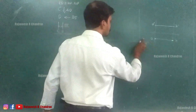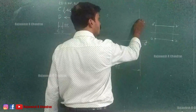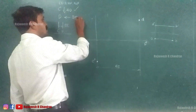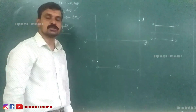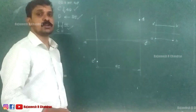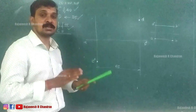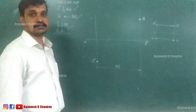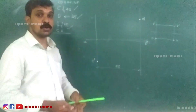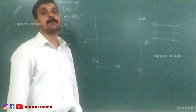D is 35mm behind VP, which means it is 35mm above the XY line, so we mark it as D on the projector through D. Now the remaining condition is that line CD is parallel to both HP and VP. From the previous video we learned that when a line is parallel to both HP and VP, both projections will be parallel to XY and both projections will show the true length. Therefore the front view C-dash D-dash and the top view CD are both lines parallel to XY.